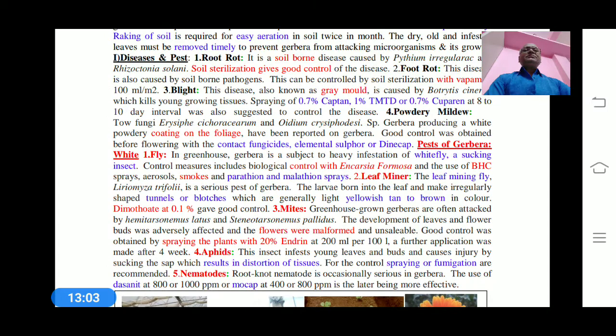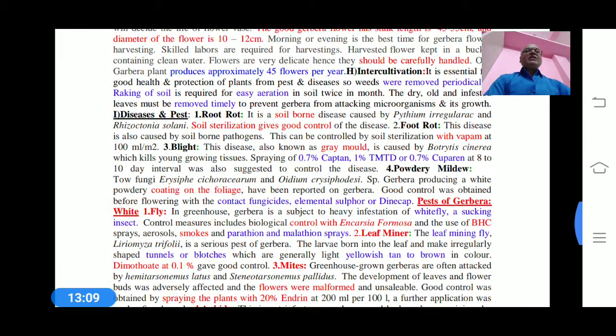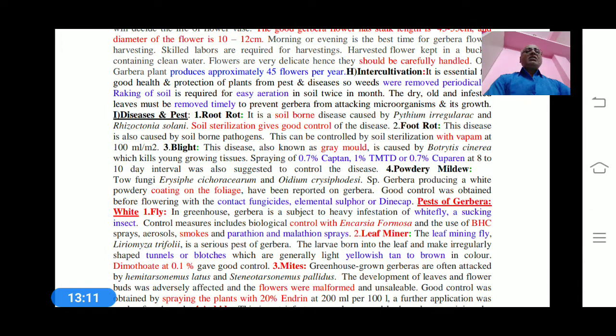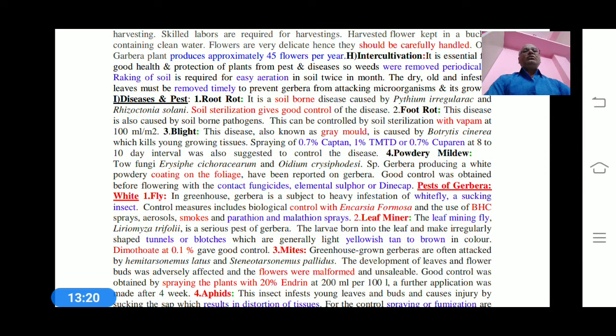Regarding diseases and pests, there are different types of diseases. One is root rot, a soil-borne disease caused by Pythium and Rhizoctonia. Soil sterilization gives good control of this root rot. Foot rot is also a soil-borne disease and can be controlled by soil sterilization method, generally with Bavistin at 100 ml per meter square.